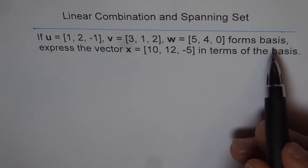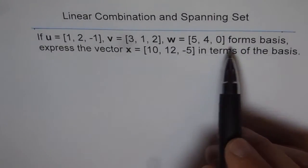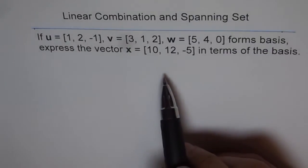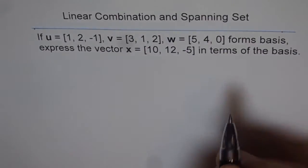So basis is another word for spanning set. So basically we are given three vectors and we say if they form a basis, then you write vector x in terms of these.